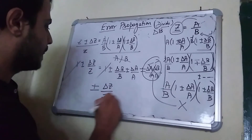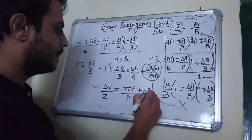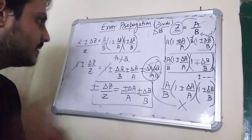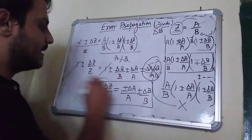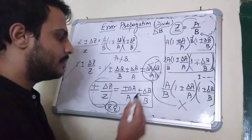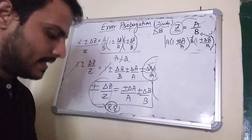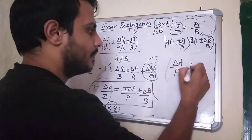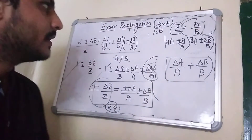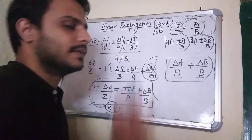At last we have the expression: δZ/Z = ±δA/A ± δB/B. Here δZ/Z is the relative error in Z, and it equals δA/A ± δB/B. The maximum value of relative error will be δZ/Z = δA/A + δB/B. So the relative error in the result is just the sum of the relative errors of the individually measured quantities.